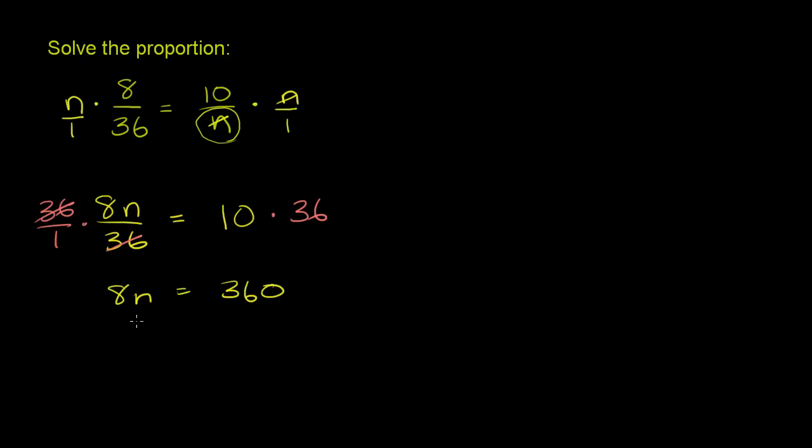Now to solve for n, we can just divide both sides of this equation by 8. So if you divide that side by 8 and that side by 8, the left-hand side, the 8s will cancel out. And you are left with n is equal to 360 divided by 8.